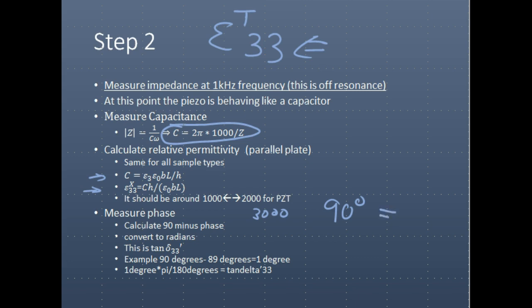But oftentimes, we find less than negative 90 phase. We may find negative 89 or something else. The way you calculate the loss is by this phase value. So 90 degrees minus whatever phase value you got, let's say 89 degrees, you'll get 1 degree.